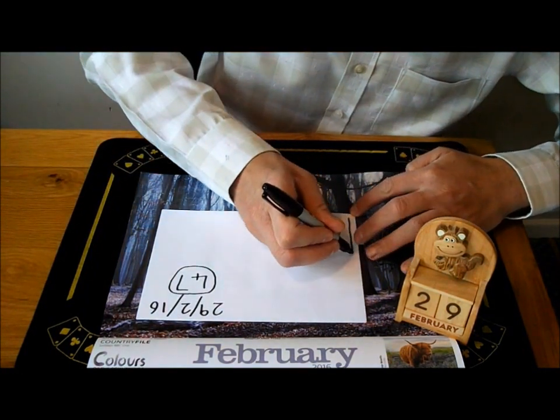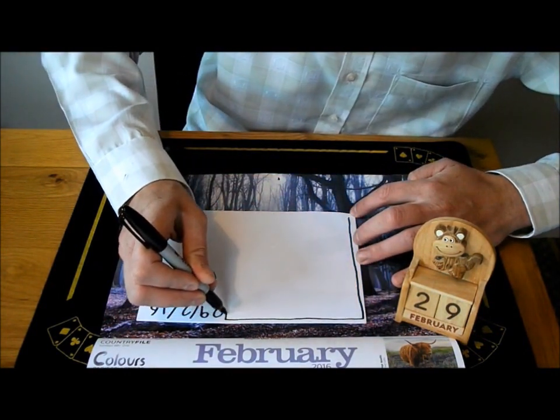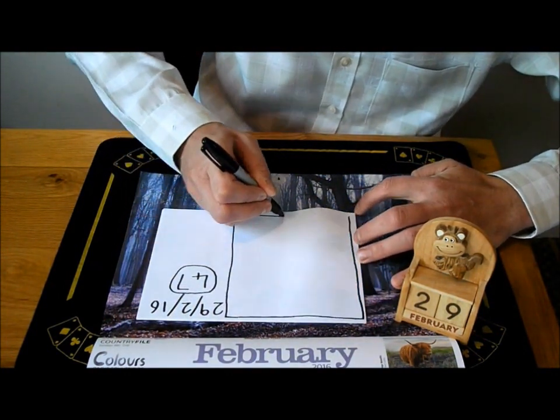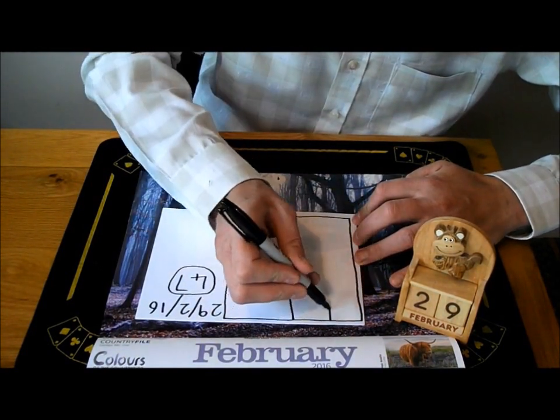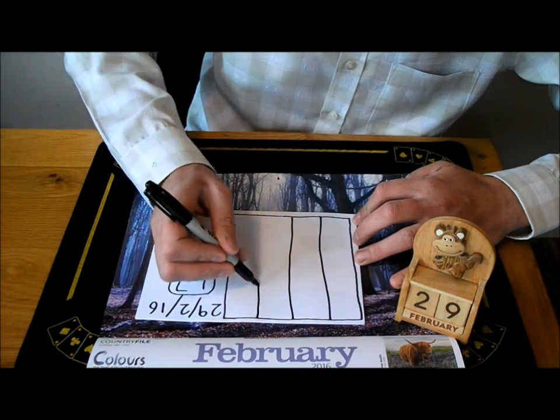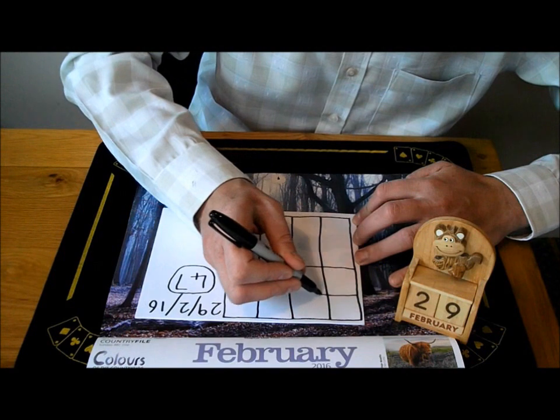Now I'm just going to draw a grid over here like this. I'll just put some lines going down like that, and some lines across. Another line there, and a line like that.